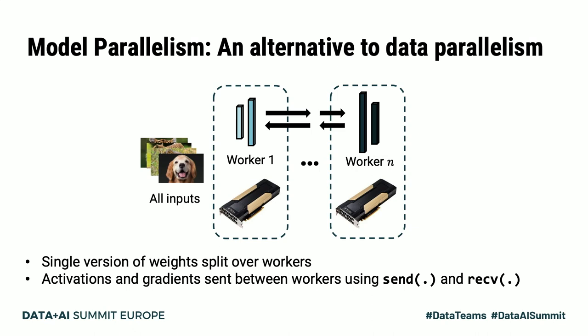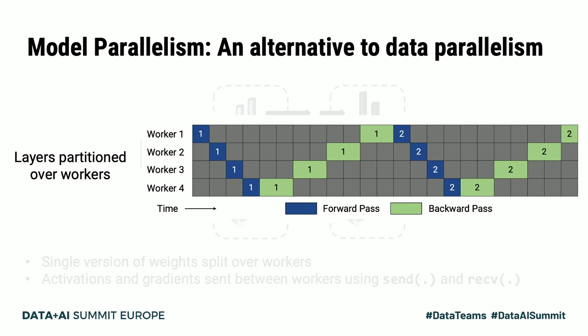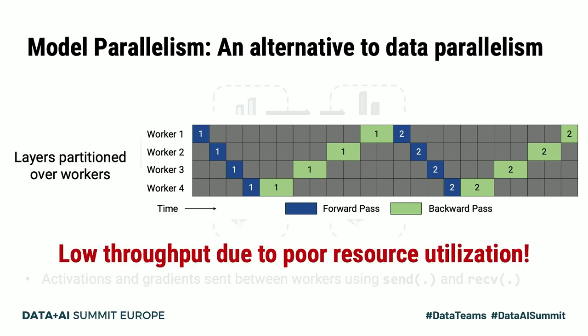Model parallelism is an alternative approach to distributing model training, where a single version of the weights is split over multiple workers. Communication between workers is now limited to intermediate activations and gradients, which can be sent using peer-to-peer communication primitives such as send and receive. This drastically reduces the amount of communication between workers. However, model parallelism as described, where layers are partitioned over multiple workers, can lead to poor resource utilization. In this timeline diagram, we show per-worker utilization on the y-axis and time on the x-axis, and we see that at any point in time, at most one worker is active, limiting throughput.